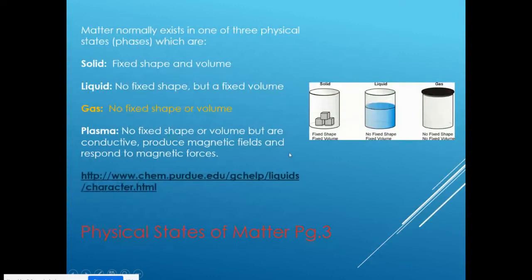Matter normally exists in one of three physical states or phases: solid, liquid, or gas. The fourth one now included in the ILM is plasma — like the surface of the sun or when you're welding. That is the plasma we're talking about. The characteristics associated with each of these different states are important to us in third year.